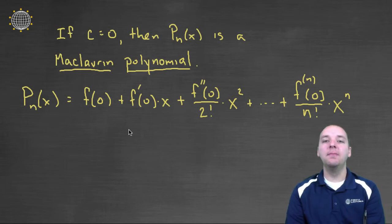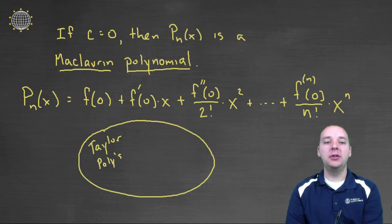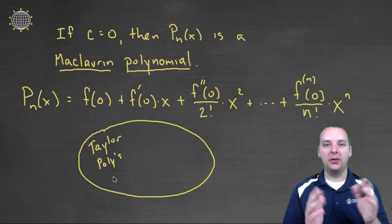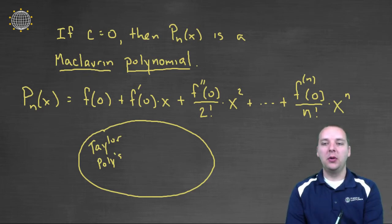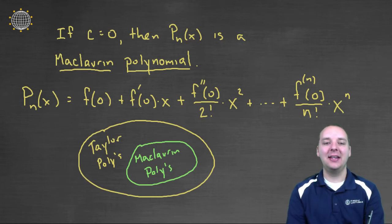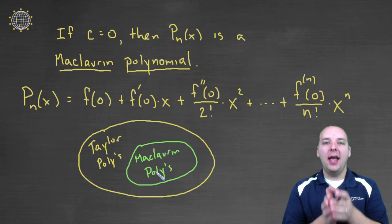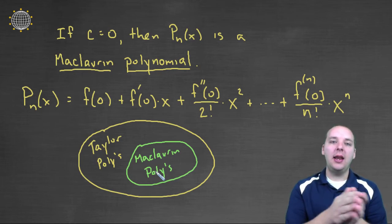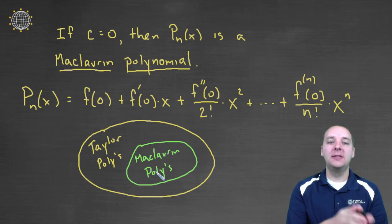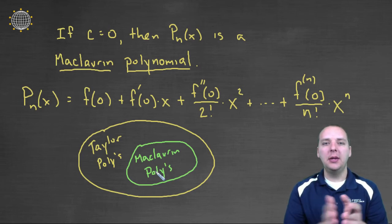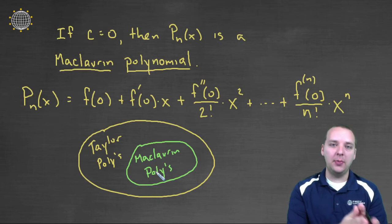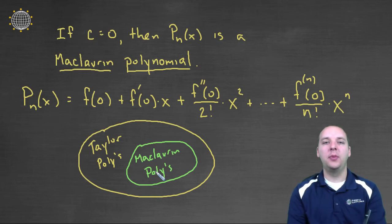Now, if you want kind of a picture to explain this hierarchy, let's say this is the set of every Taylor polynomial there is. A Maclaurin polynomial would be inside that set. The logic would go like this. Every Maclaurin polynomial is a Taylor polynomial, but not every Taylor polynomial is a Maclaurin polynomial. Anyway, hopefully that helps explain the difference between a Taylor polynomial and a Maclaurin polynomial.